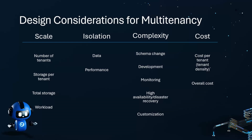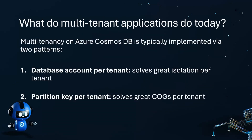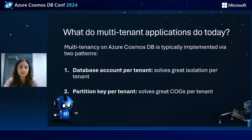If you require high availability and disaster recovery, this is another decision to make note of. Another often overlooked area is tenant customization — understanding how individual tenants can customize their settings to fit their needs. Multi-tenancy today is typically implemented in two patterns: one is to provision one database account per tenant, which solves the performance isolation consideration; the other is partition key per tenant, which solves for lower cost per tenant but bounds us to one container for our entire workload.